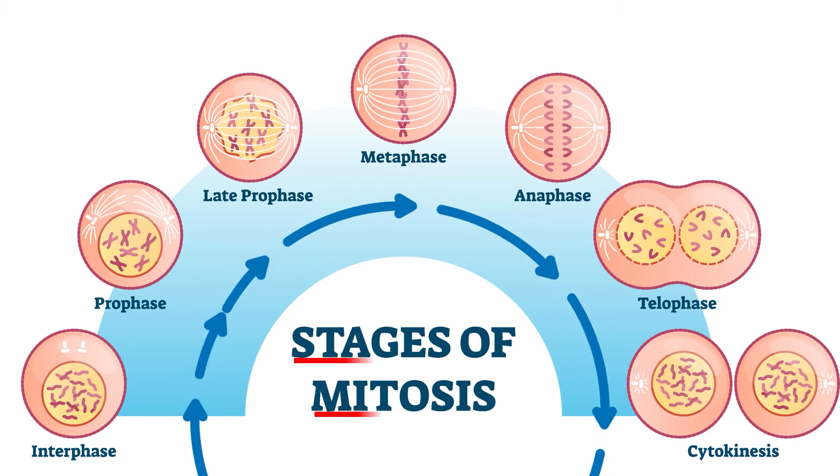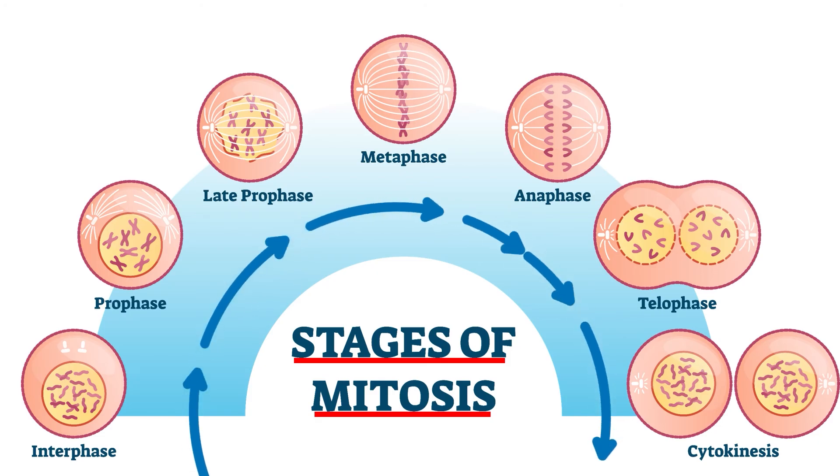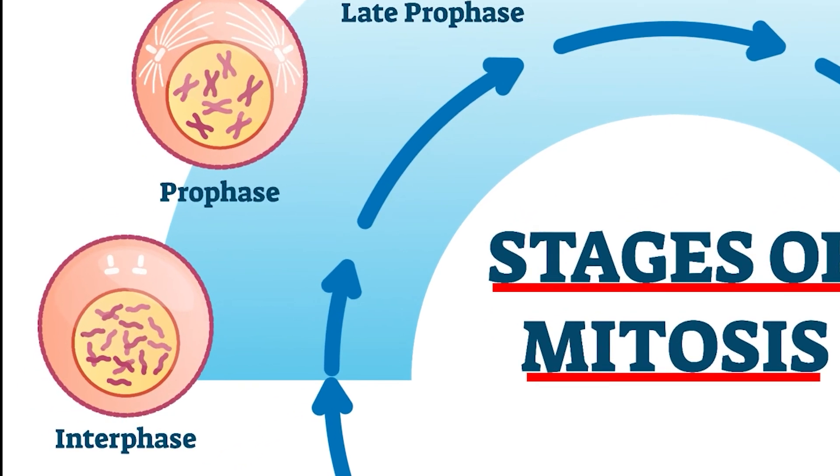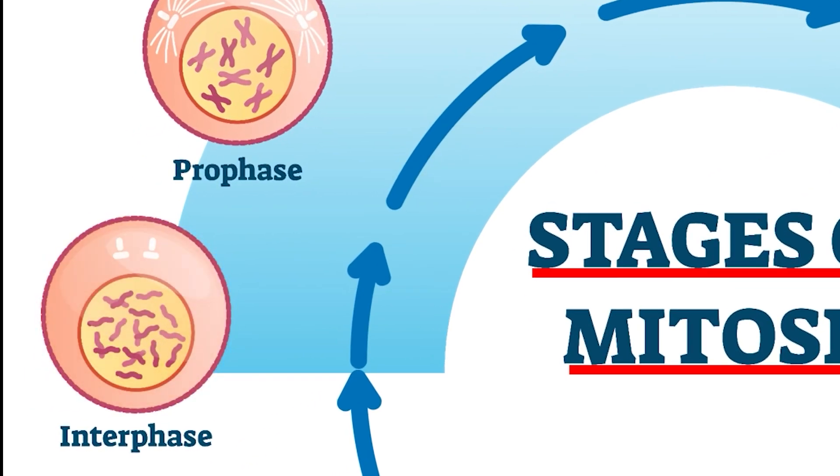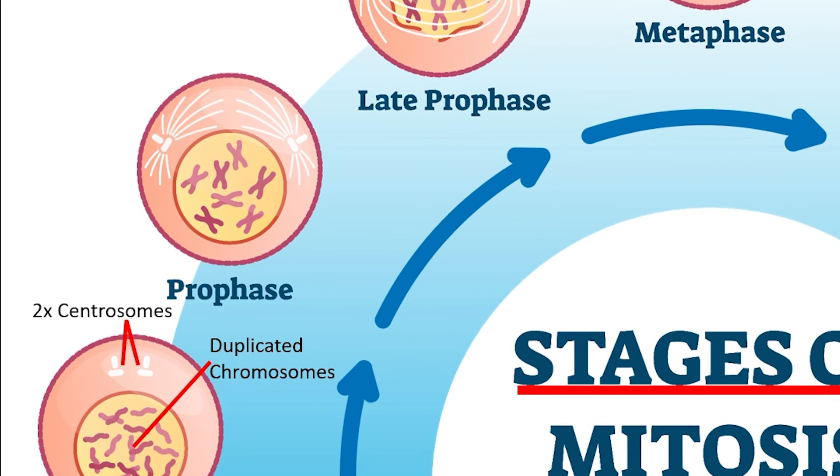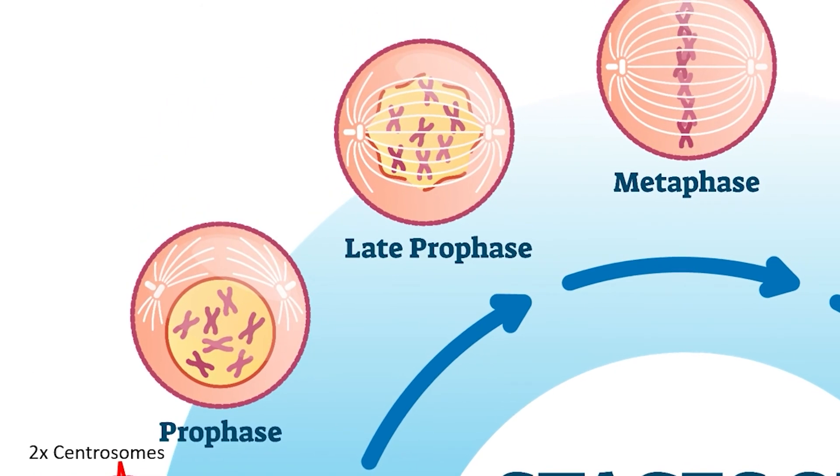Let's look at the specific stages of mitosis and what happens in each stage. As the cell enters the process of mitosis from interphase, two features are discernible. The chromosomes have been duplicated and there are now two centromeres that will organize the spindle fibers needed to separate the chromosomes. This brings the cell to the start of mitosis, a stage known as prophase.